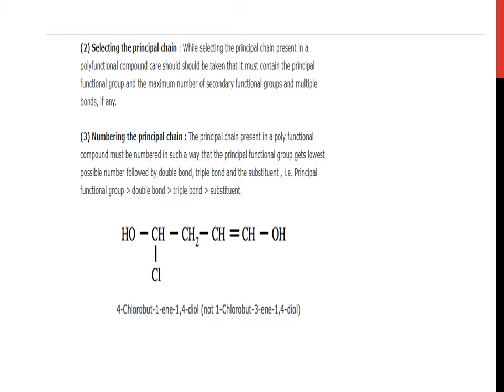Number 2: Selecting the principal chain. While selecting the principal chain present in a polyfunctional compound, care should be taken that it must contain the principal functional group and the maximum number of secondary functional groups and multiple bonds if any. Third, numbering the principal chain. The principal chain must be numbered in such a way that the principal functional group gets the lowest possible number, followed by double bond, triple bond, and the substituent.